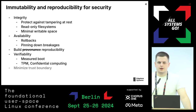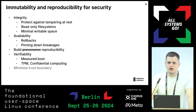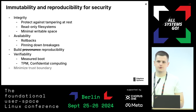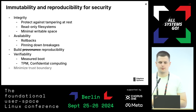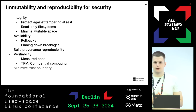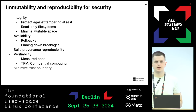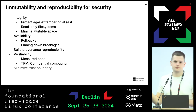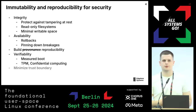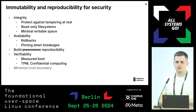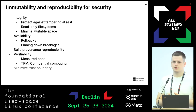Immutable systems also give great benefits regarding availability. With an A/B booting scheme, if we upgrade our kernel and it breaks the system, we can always roll back to a previous generation. We can do rollbacks, and with a transactional update system we can pin down failures to specific package updates that introduced the breakage. For example, if audio breaks and you upgraded PulseAudio two weeks ago, you can roll that back too.